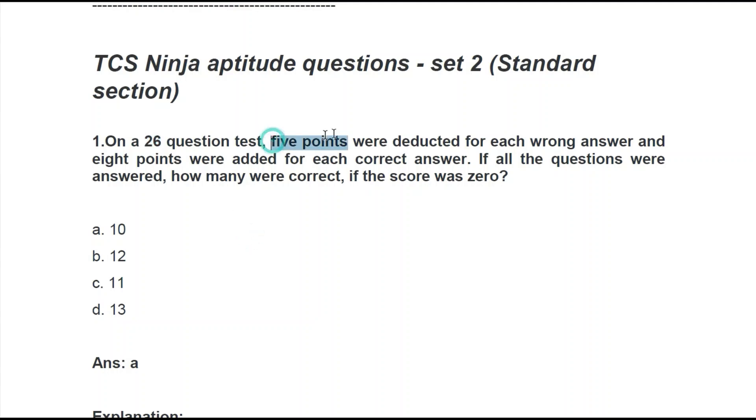And now, 5 points were deducted for each wrong answer. So 26 minus x into 5 is the points that have been deducted. And 8 points were added for each correct answer. So here we can write, as we have correctly answered x questions, so 8 into x is the number, is the marks that we have got.